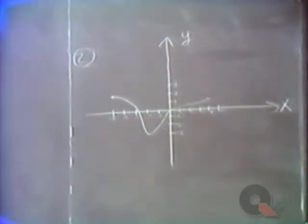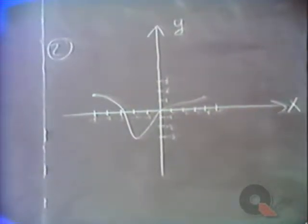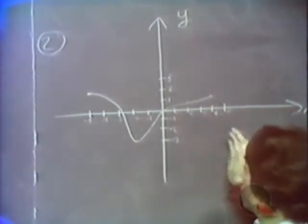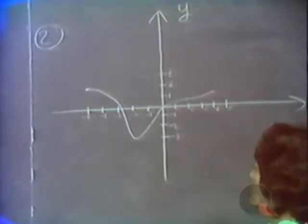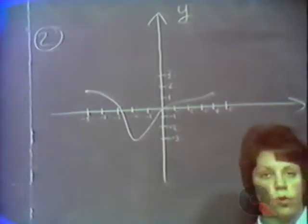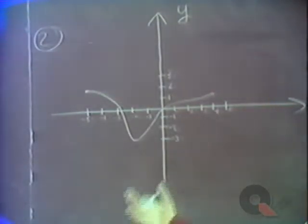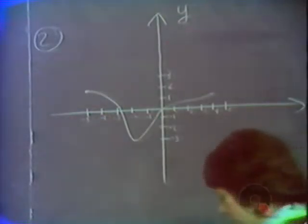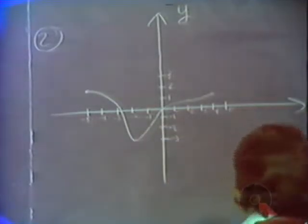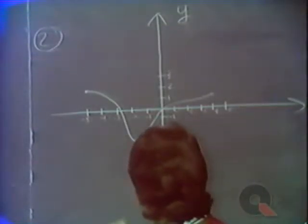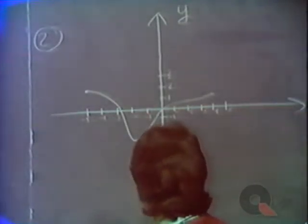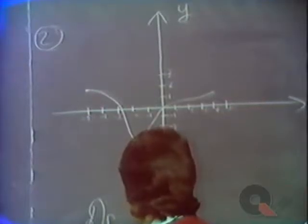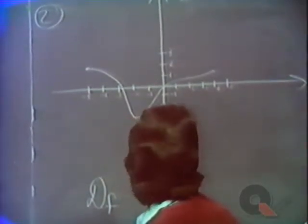In our next example, we are given a function by means of seeing its graph. We're not given an equation which defines the function, but we're given a picture of the function. We're asked for the domain and the range of this function. Let's say that this is the function f, and we're interested in the domain and the range.